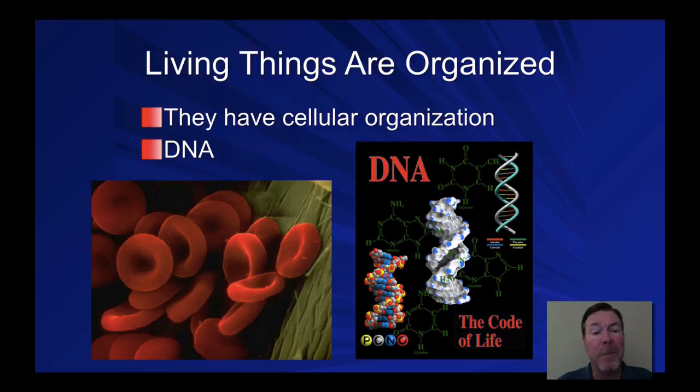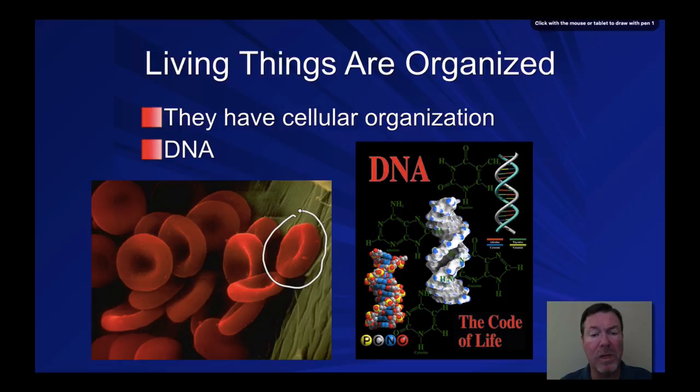The characteristics of life are the six things that all living things do. If it's considered a living organism, it will do all six of the following things. If it doesn't do one of those things, it's not considered alive — I'll talk about that more at the end. So let's get started. The first one: all living things are organized, whether we're talking about red blood cells or any other cell.